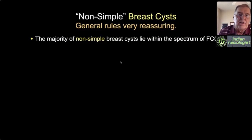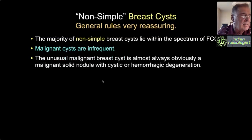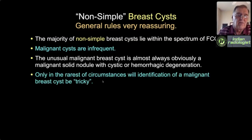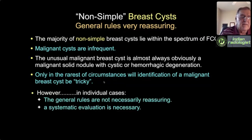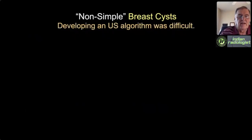The general rules for non-simple cysts are very reassuring. The majority lie within the spectrum of fibrocystic change. Malignant cysts are relatively infrequent—the unusual malignant breast cyst usually has the appearance of a solid nodule with liquefactive or hemorrhagic central necrosis. But these are population-level rules, so in individual cases you still need a systematic way of evaluating, especially in patients who always seem to be the exception to the rule.